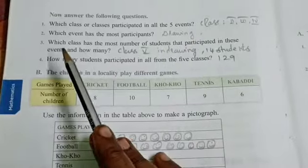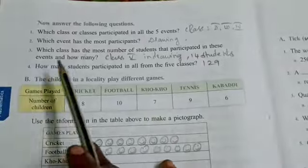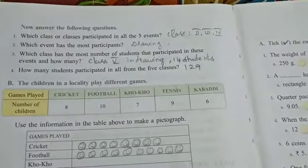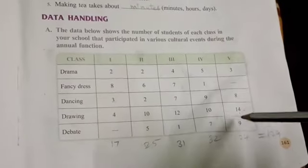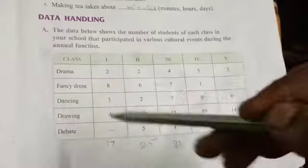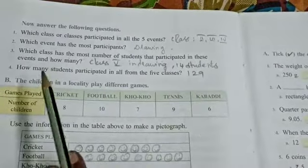Third one: which class has the most number of students that participated in the events, and how many? Which class has the most number of students that participated in one particular event? In fifth class, drawing is the event where 14 students participated. Compared to the others, 14 is the biggest one. So totally 14 students participated. Class 5 in drawing, 14 students participated.